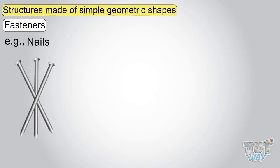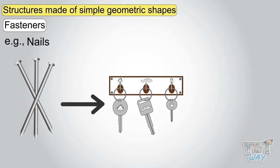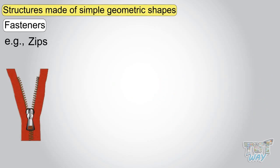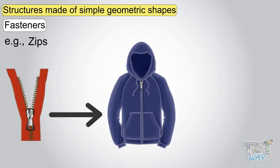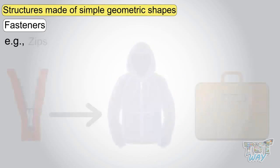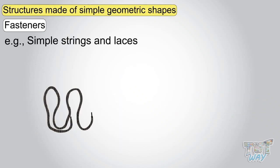Nails are also simple fasteners used to hang things on walls and boards. Zips are another important fastener used in clothes and purses. Simple strings and laces can also be fasteners, used in shoes.